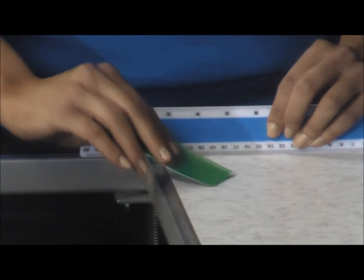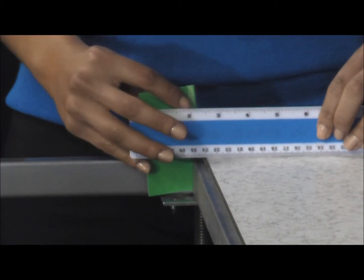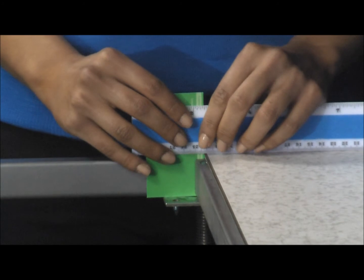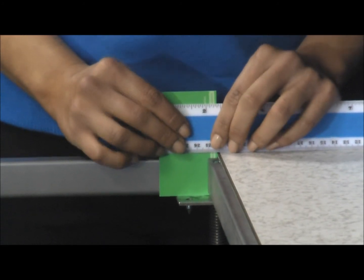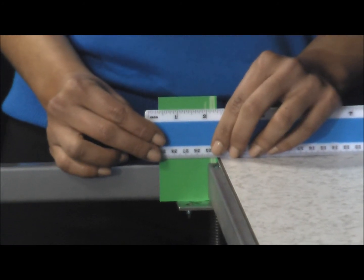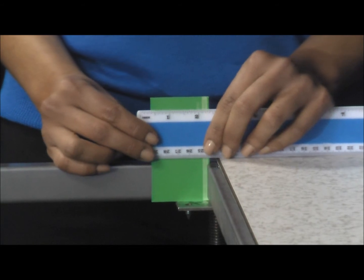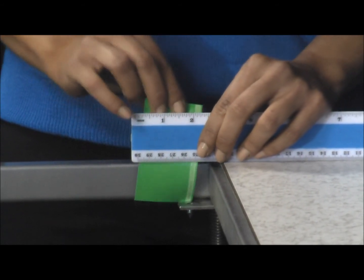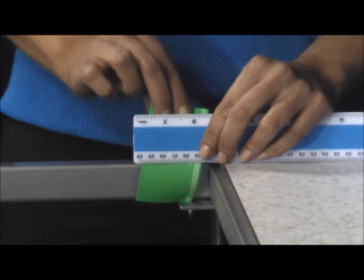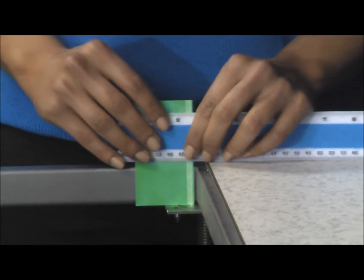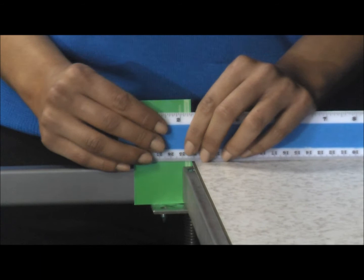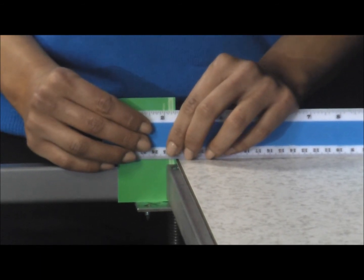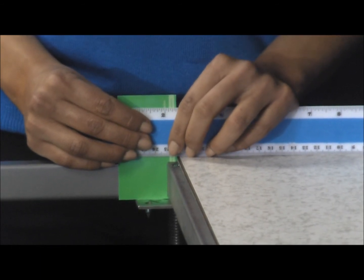Position a sturdy business card on its end flat against the back side of the ruler. Be careful not to put too much pressure on the business card or it will bow out like this, and this will give you a false measurement. Now we'll make a pencil mark line on the business card along the bottom edge of the ruler.